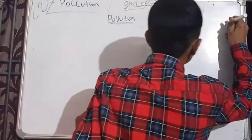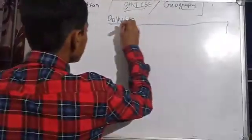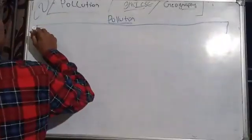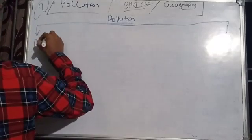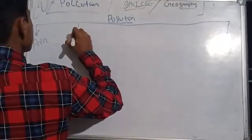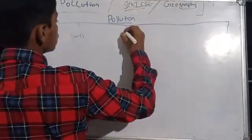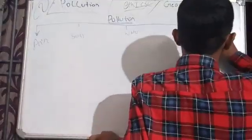Okay, now we will see the pollution. Pollution is four types. We will see air pollution, soil pollution, water pollution and radioactive pollution.